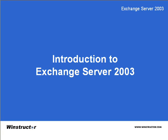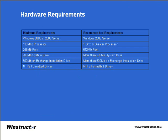Before we start installing Exchange 2003 and seeing what it has to offer, we first need to ensure that we have a server that meets the requirements for Exchange. To run Exchange 2003 properly, you're going to need a system running Windows 2003 Server or Windows 2000 Server with Service Pack 3 or higher. If you plan on running the Enterprise edition of Exchange 2003, you'll need the Enterprise or Data edition of Windows 2003 Server. If you want to run the standard edition of Exchange, you can use any edition of Windows 2003.